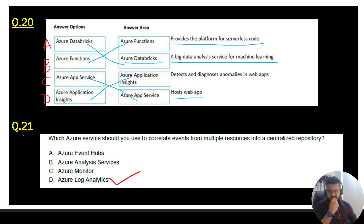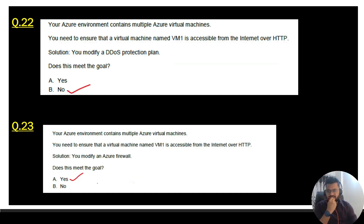Question 21: which Azure service should you use to correlate events from multiple resources into a centralized repository? The correct answer is Azure Log Analytics.